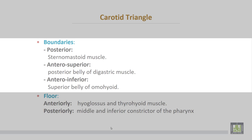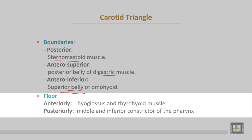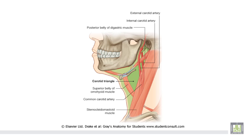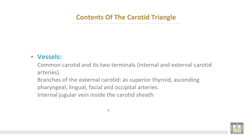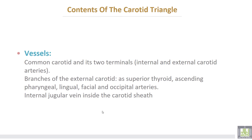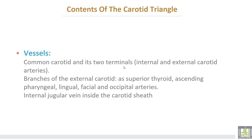The carotid triangle is bounded posteriorly by the sternomastoid muscle, anterosuperiorly by the posterior belly of the digastric muscle, and anteroinferiorly by the superior belly of the omohyoid. The floor of the carotid triangle is formed anteriorly by the hyoglossus and thyrohyoid muscles, and posteriorly by the middle and inferior constrictors of the pharynx. Its contents include vessels: the common carotid artery and its two terminal branches, the internal and external carotid arteries.